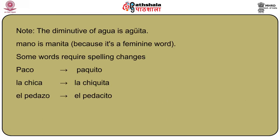You can add -cito or -cita to words not ending in -o or -a. The diminutive of agua is agüita. The diminutive of mano is manita — because mano is feminine: las manos. Some words used as a diminutive require spelling changes because the rules of spelling and pronunciation must be maintained. That is why Spanish requires a spelling change to preserve the sound. So paco becomes paquito (p-a-q-u-i-t-o), and la chica becomes la chiquita (c-h-i-q-u-i-t-a).